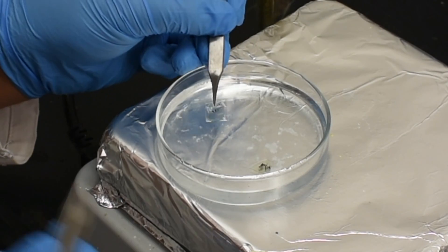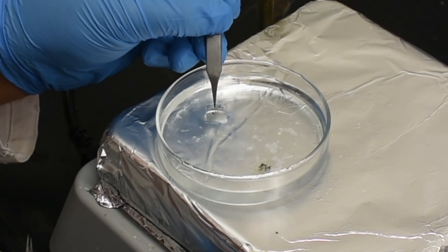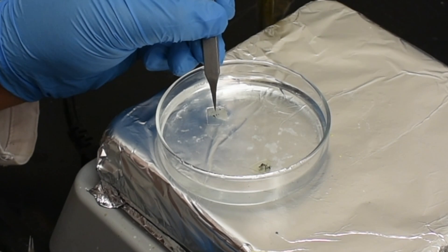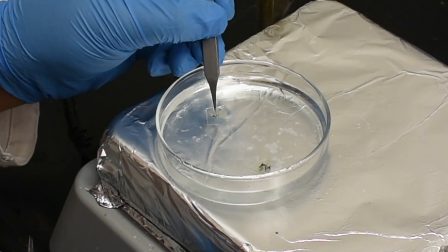Once an edge has clearly begun to separate, hold the substrate at a 45-degree angle and patiently let the water slowly separate the films from the substrate.